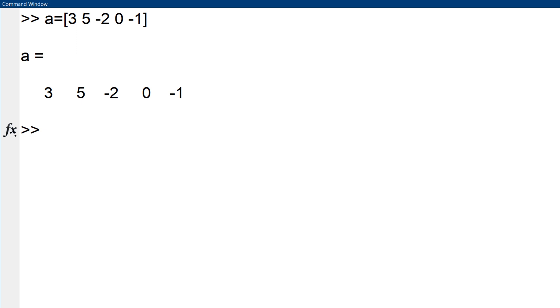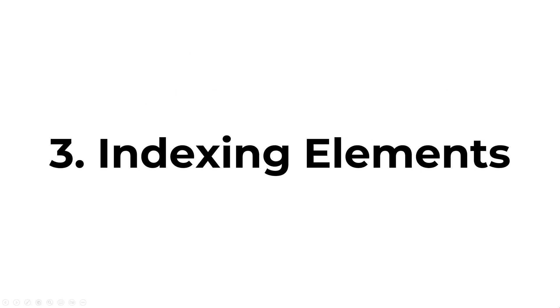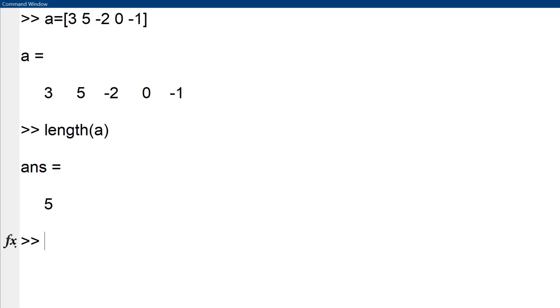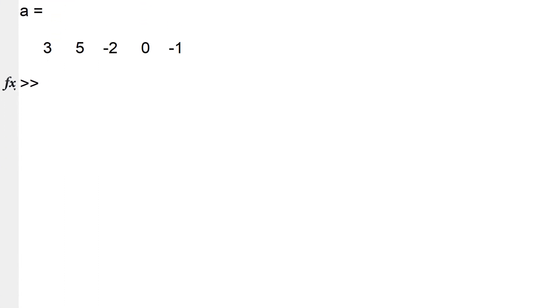This approach is straightforward and works best if there are no patterns among the elements. You can use a built-in function length to find the size of vector. Type length A to give you the size of vector which is 5. To access the specific element in given row vector, you can use index within the parentheses. For example, if you need to access to third element, minus 2, type A parenthesis 3, then you can see minus 2. 3 means index number 3, it shows minus 2 as expected.